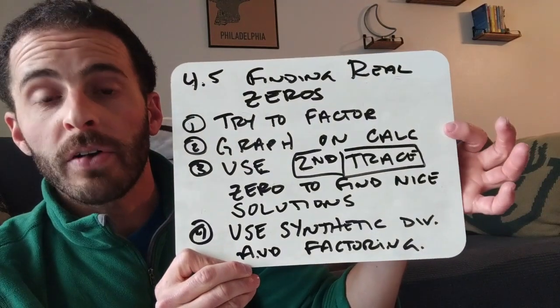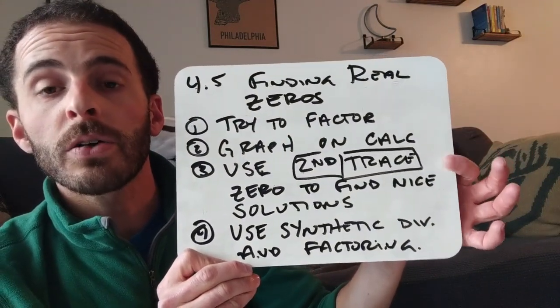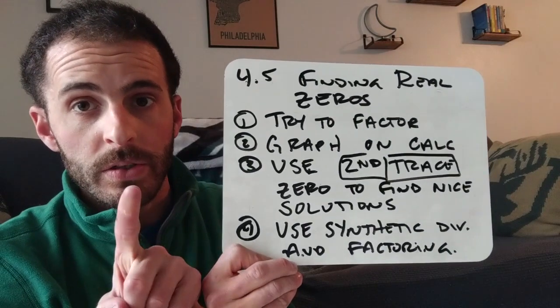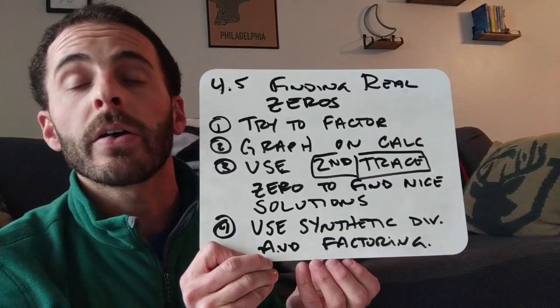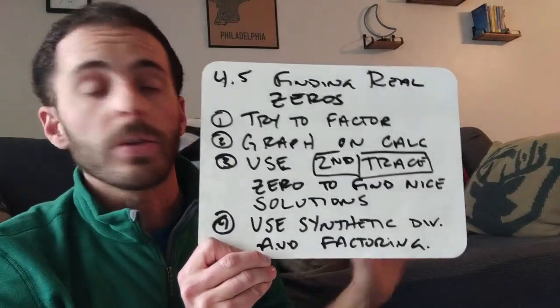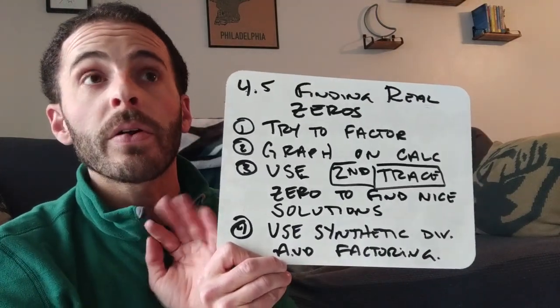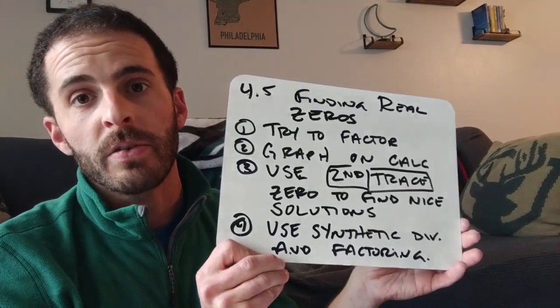Then I want you to graph it on your calculator. Use second trace 0 to find one of the 0s, just one of them. Then use that 0 for synthetic division until you find all of the 0s. You can use your graphing calculator to check your work. Remember, they're not all going to be nice like number 5. Most of them are going to be like number 6.